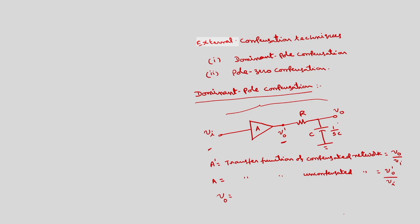So, V0 equals V0 dash times 1 over SC, divided by R plus 1 over SC. SC will get cancelled, so this is equal to 1 over (1 plus SRC) times V0 dash.